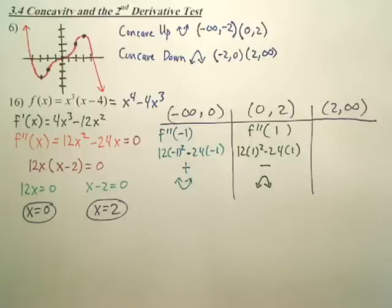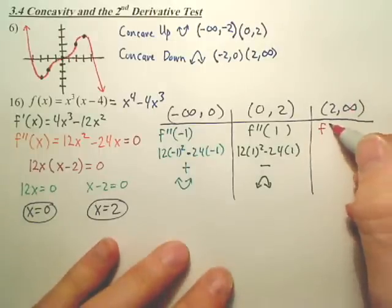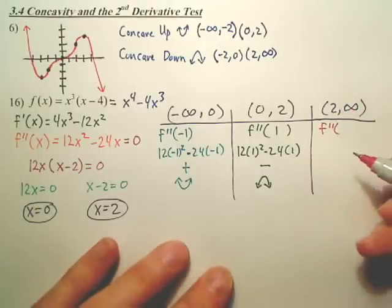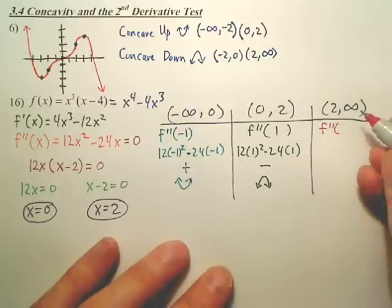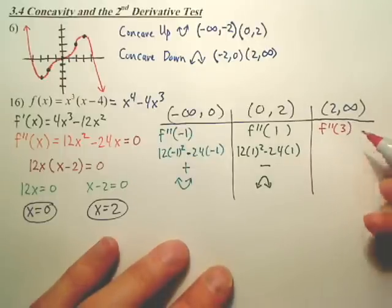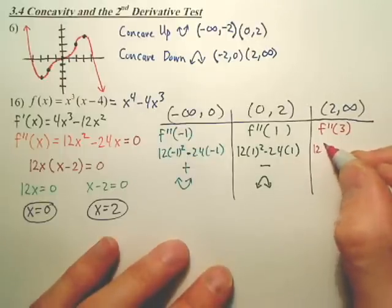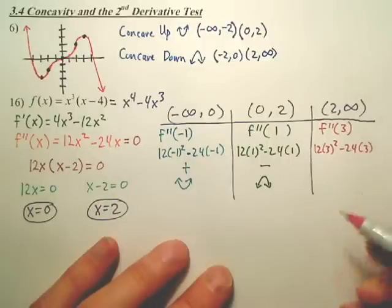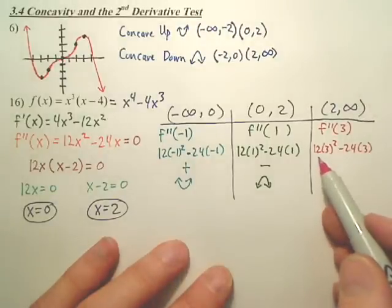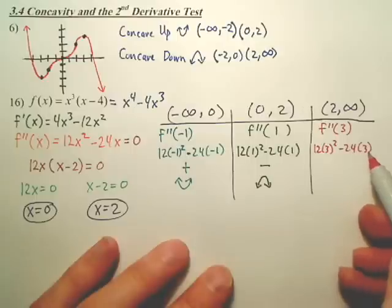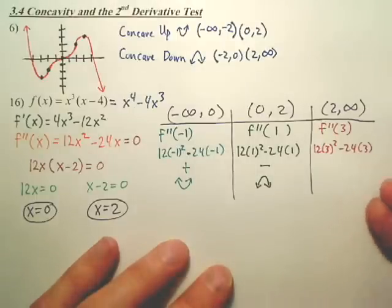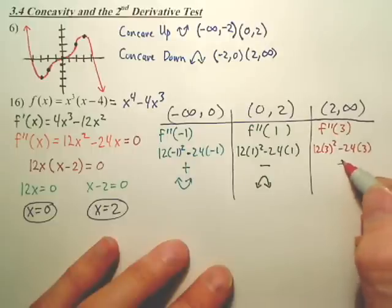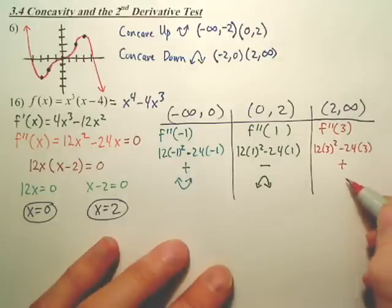Okay, and the last one. You want to plug in, what? 3 probably? The smaller the better. So, 12 times 3 squared minus 24 times 3. That's going to be 9 times 12. And that's going to be like 72 or something. So, probably positive. Looks like a positive value. So, that means it's happy.